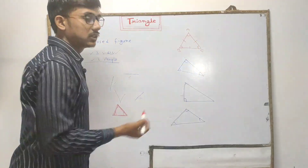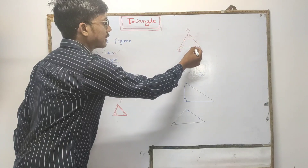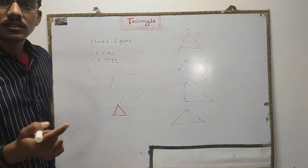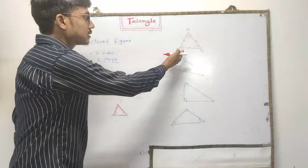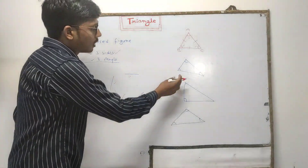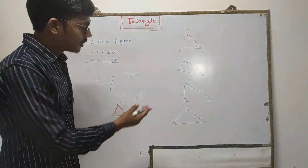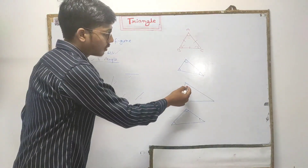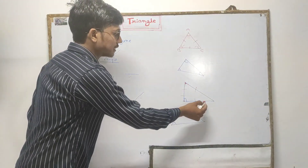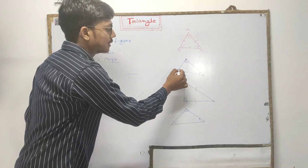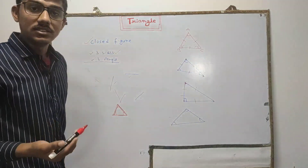One, two, three — there are three sides and there are three angles. So you can say this figure is also a triangle, and it is also a closed figure. This is also a triangle because there are three sides and three vertices connecting to each other.